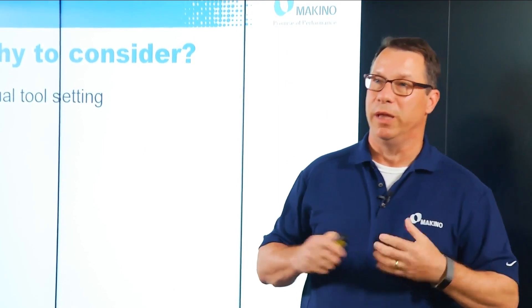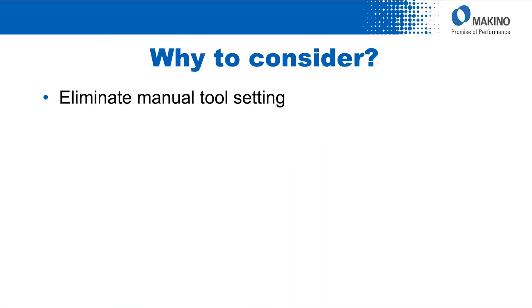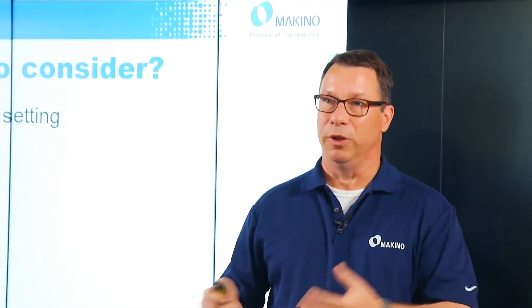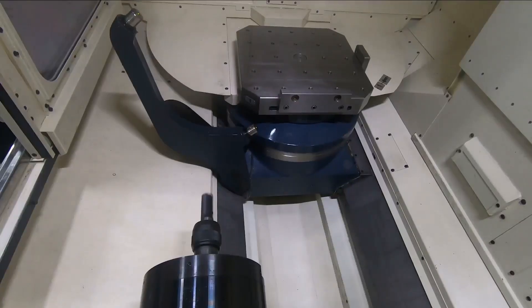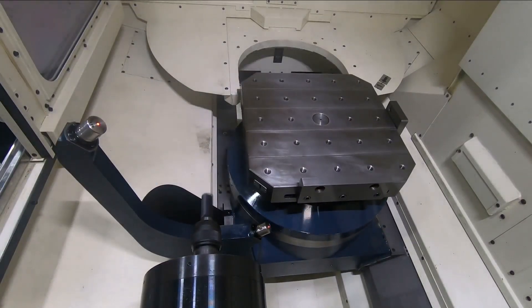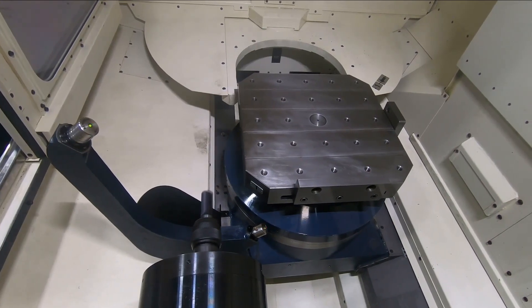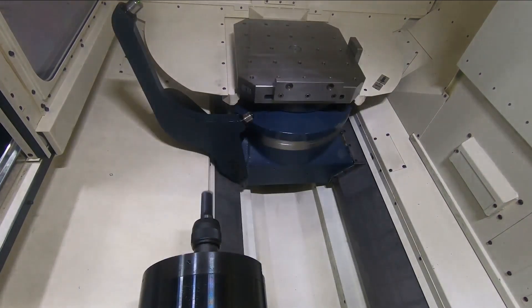Why would somebody want to do in-machine tool measurement? First and foremost, the potential exists to eliminate manual tool setting — basically allow your machine tool to do a little bit more work for you. Bring that tool into the machine; it's already going to be assembled into the holder, clamped in the spindle, representative of exactly how that tool is going to see the workpiece, and eliminate doing that offline, as well as eliminating the variability that goes with checking it offline versus checking it clamped up in the machining center.